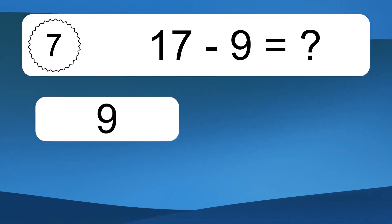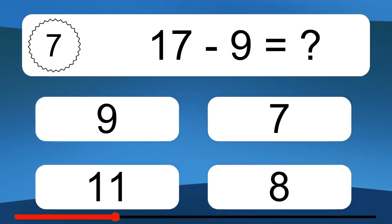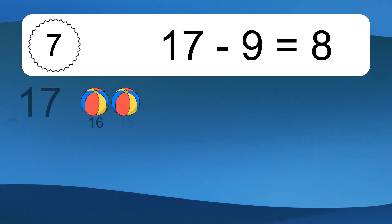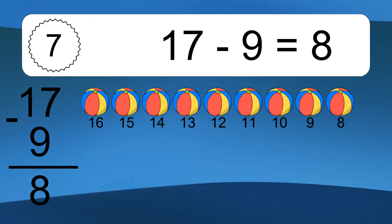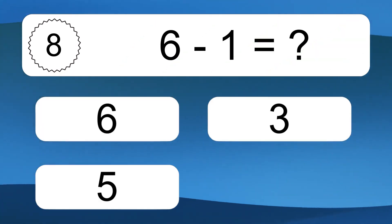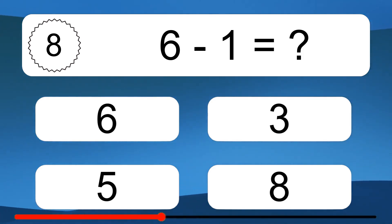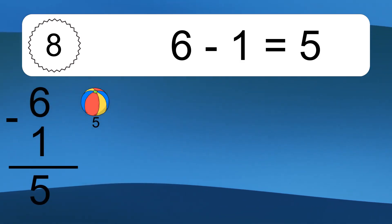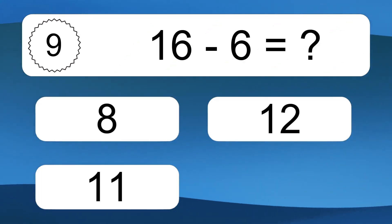17 minus 9 equals what? 17 minus 9 equals 8. Let's count it: 16, 15, 14, 13, 12, 11, 10, 9, 8. 6 minus 1 equals what? 6 minus 1 equals 5. Let's count it: 5.